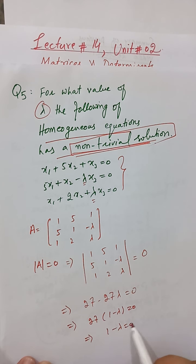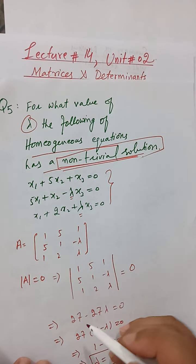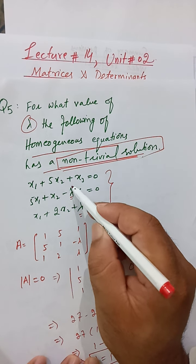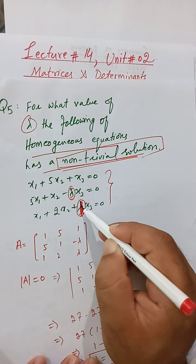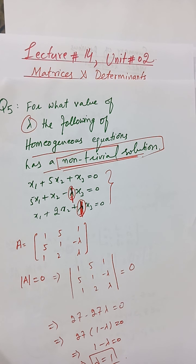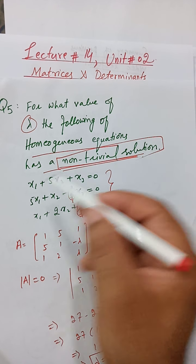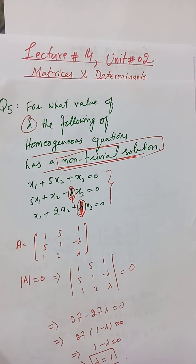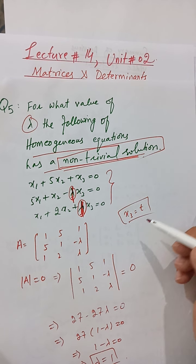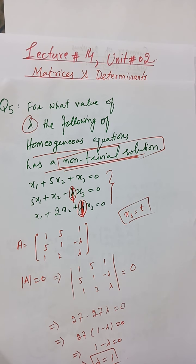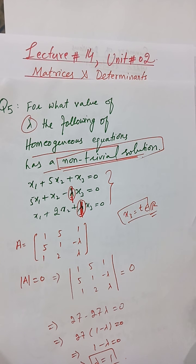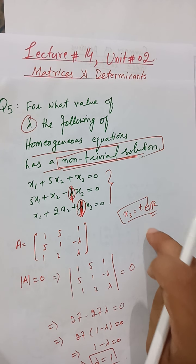Taking 27 common: 1 - lambda = 0. Dividing both sides by 27: lambda = 1. When lambda = 1, replacing lambda in the system gives a determinant of A equal to zero, confirming a non-trivial solution exists. To find that non-trivial solution, assign an arbitrary parameter to one variable — for example, let x3 = t where t belongs to the real numbers — and there will be infinitely many solutions, as shown in the previous part.